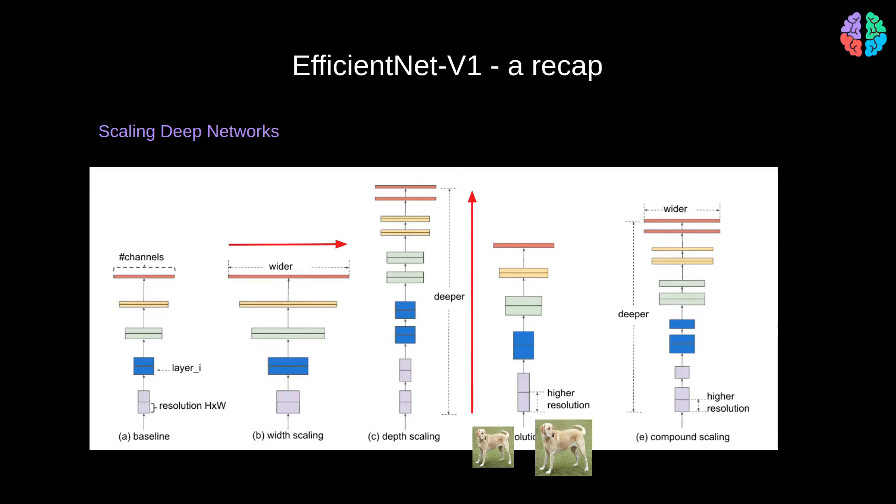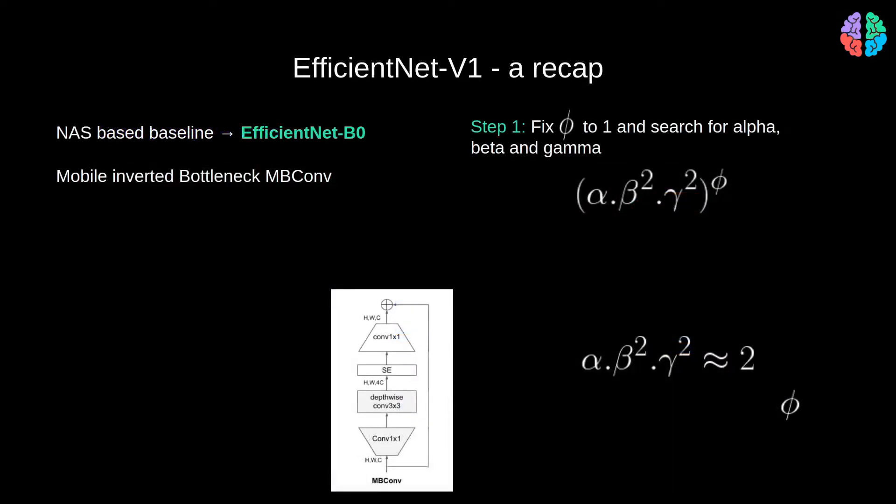So EfficientNet version 1 proposes a compound scaling method where we combine all the three ways of scaling. In order for the scaling to be applied, we first need an initial architecture to start with.